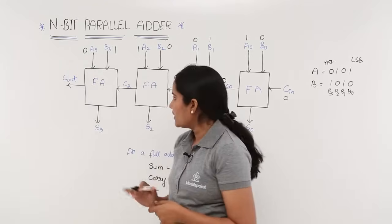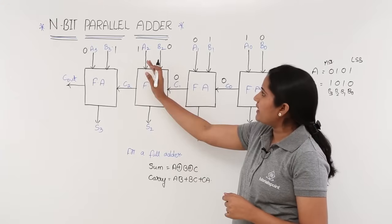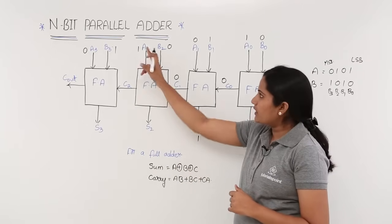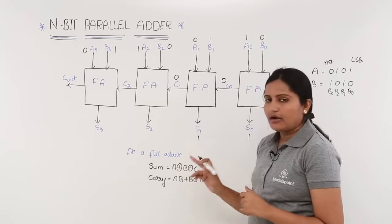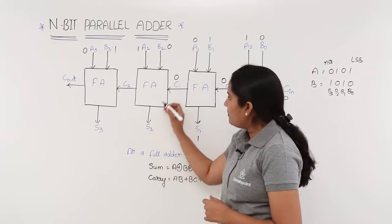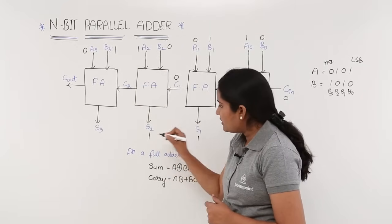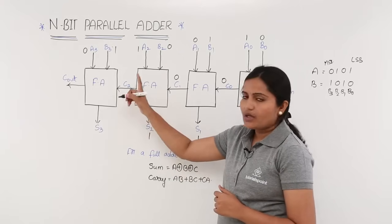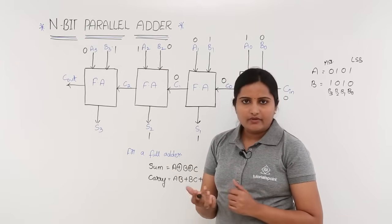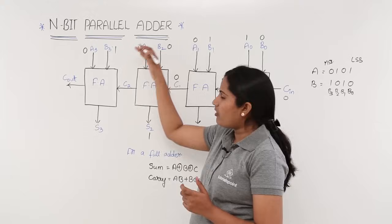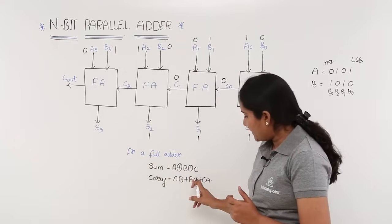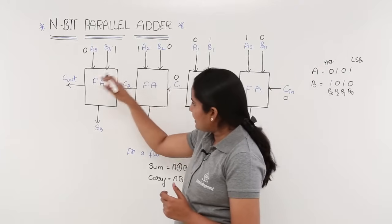Now we come to the third full adder. The carry from the second full adder is given as input, so the inputs are 1, 0, 0. For the sum, XOR of 1, 0, 0: only a single 1 is present, so XOR gives S2 = 1. For carry: 1×0 + 0×0 + 0×1 = 0. Adding all those zeros, the carry here is also 0.